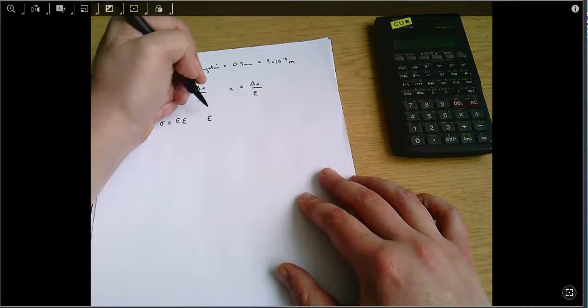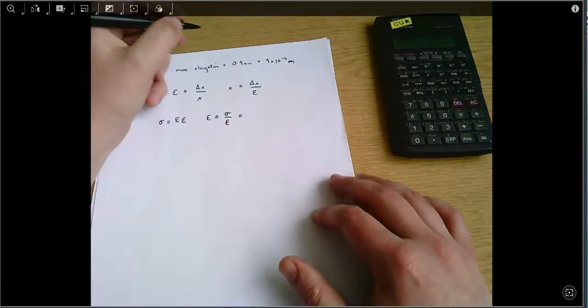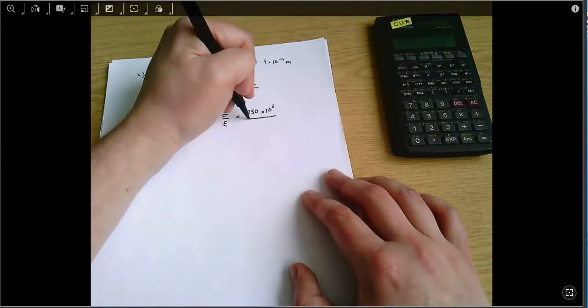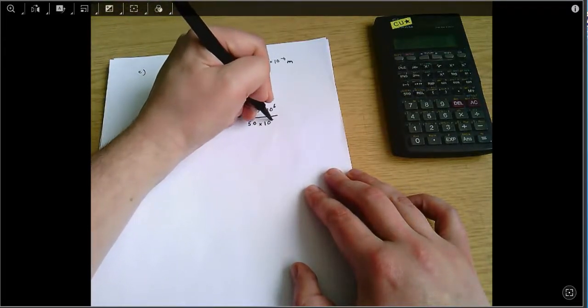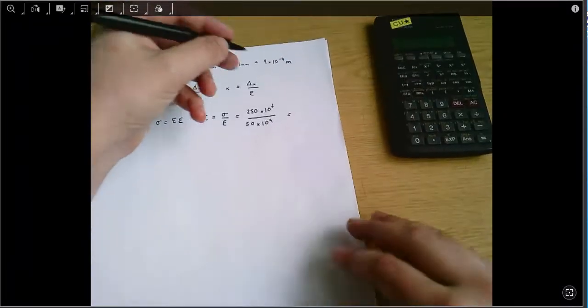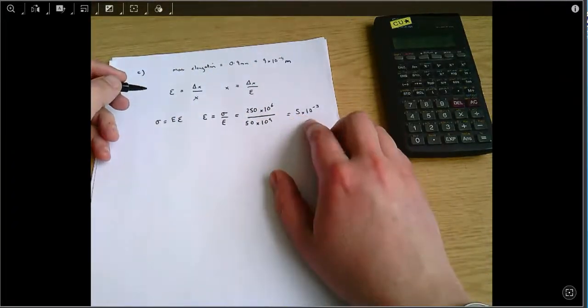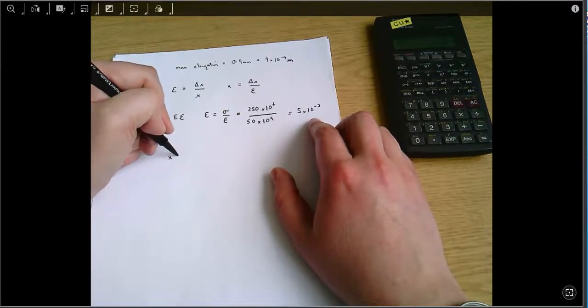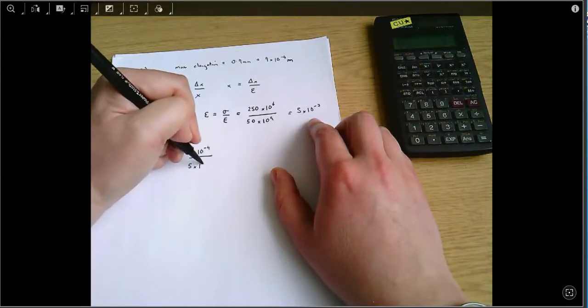So epsilon equals sigma over E, and we're working to 250 megapascals divided by our Young's modulus, which we calculated, is 50 times 10 to the 9. And that means we've got a strain of 5 times 10 to the minus 3. Remember, strain has no units here. So x equals 9 times 10 to the minus 4 divided by 5 times 10 to the minus 3.